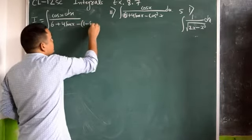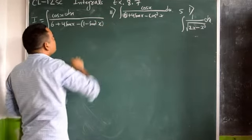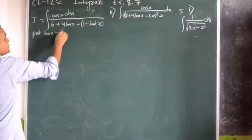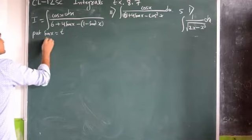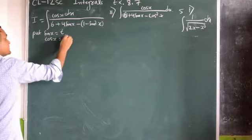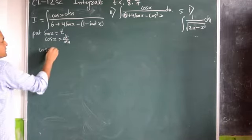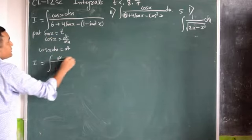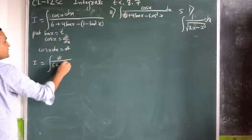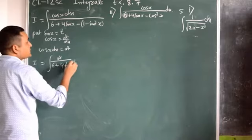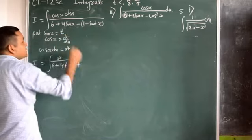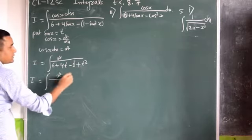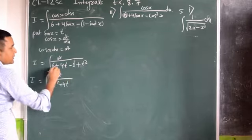That means the denominator becomes 6 + 4 sin x − (1 − sin^2 x). Substituting sin x = t: differentiation of sin x is cos x, and cos x dx = dt. So I equals the integral of dt divided by (6 + 4t − 1 + t^2). Simplifying the terms: dt divided by (t^2 + 4t + 5).